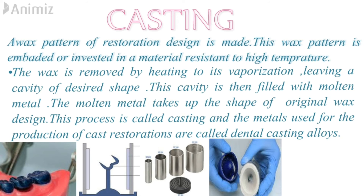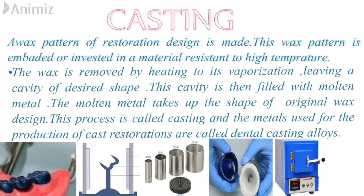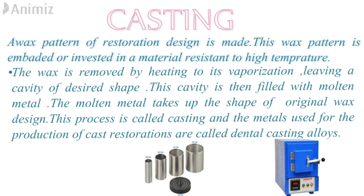Then the wax is removed by heating to its vaporization, leaving a cavity of the desired shape. The wax is removed with the help of a muffle furnace. Finally, this cavity is filled with molten metal. The molten metal takes up the shape of the original wax design. This process is called casting.